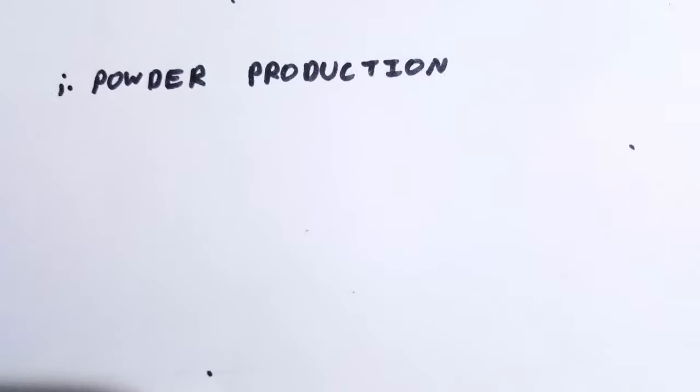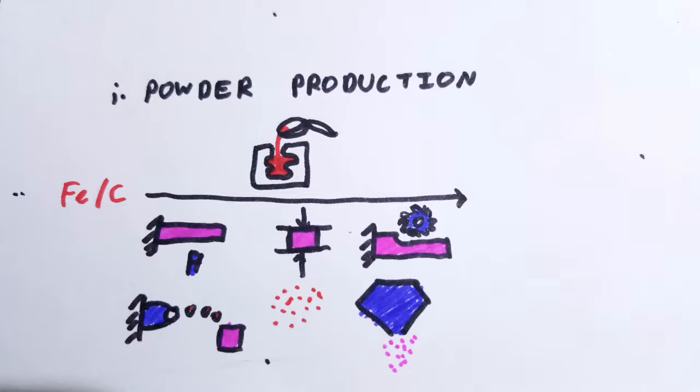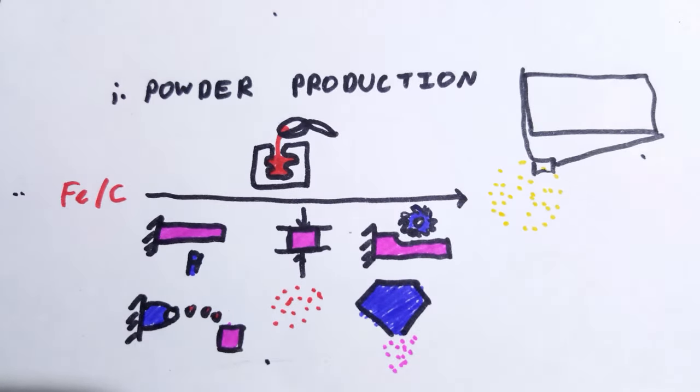First comes powder production, in which the metal or non-metal undergoes various mechanical processes like machining, crushing, milling, shortening, graining, and atomization to produce powder in the form of small chips, fillings, break-offs, etc.